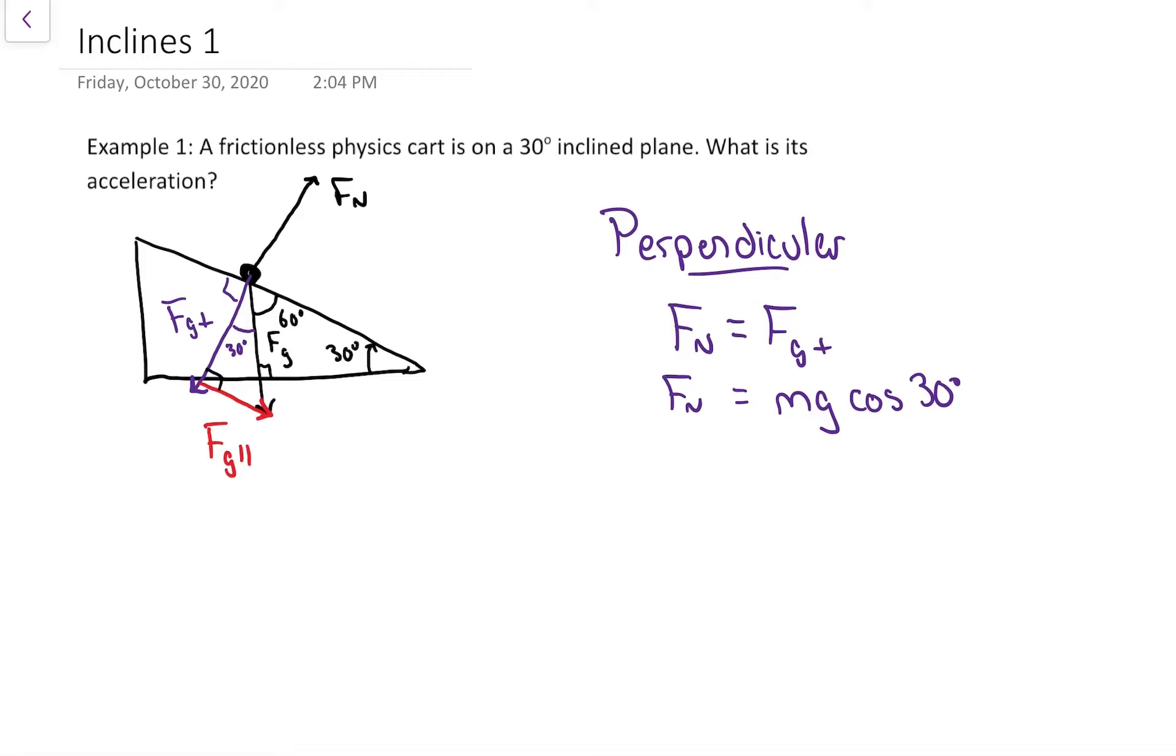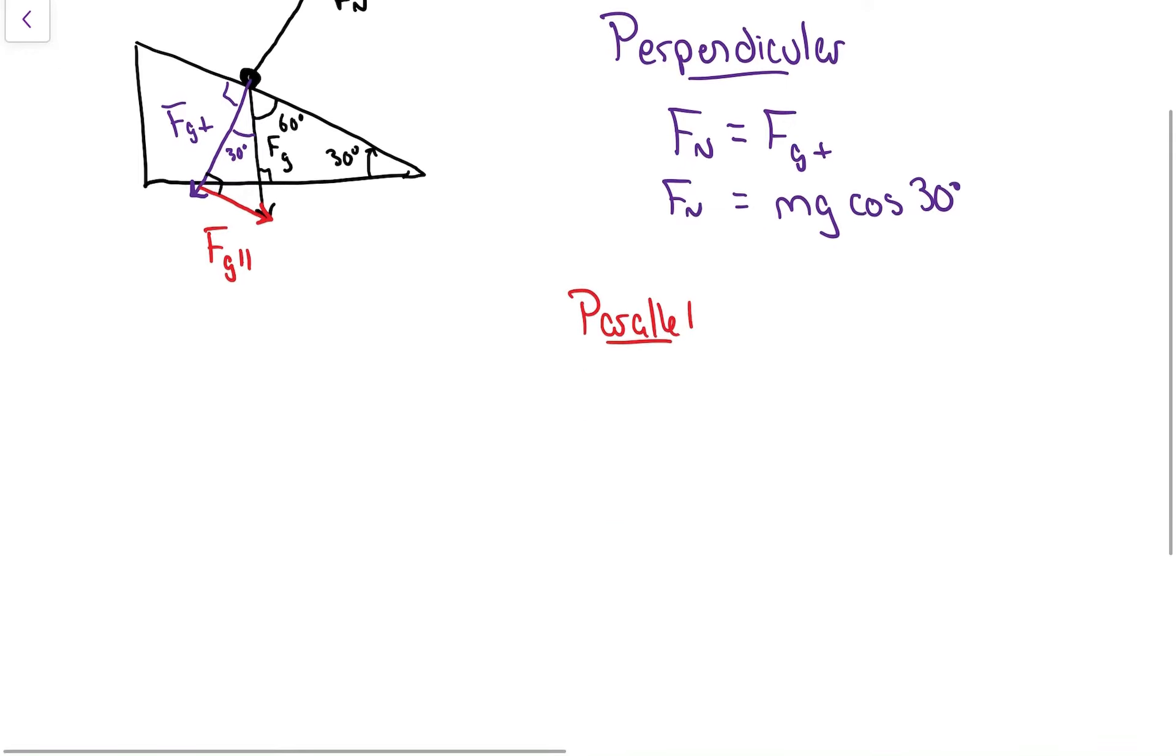In the parallel component, that's where part of gravity is actually making this thing accelerate, so I'm going to set up F net equals ma. In this one, I've only got one force pulling it downhill, so that's my only positive force. It's FG parallel, and that's equal to ma. FG parallel, look at the purple, black, red triangle; it's opposite my angle, so it's a sine relationship.